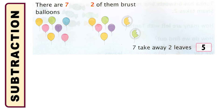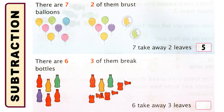Let me show you another example. You can see there are six bottles. Among them, if I break three, how many were left? If you count, there are one, two, three — three bottles were left among the six. So six take away three leaves three.